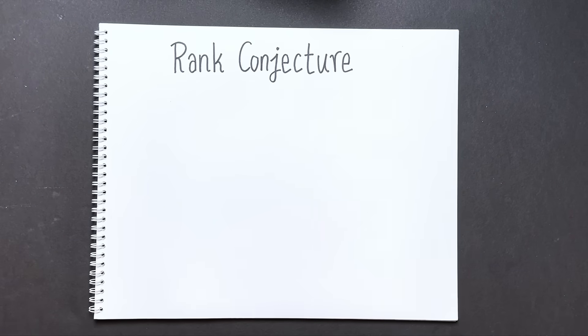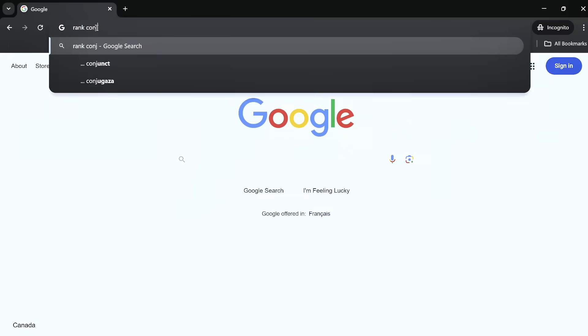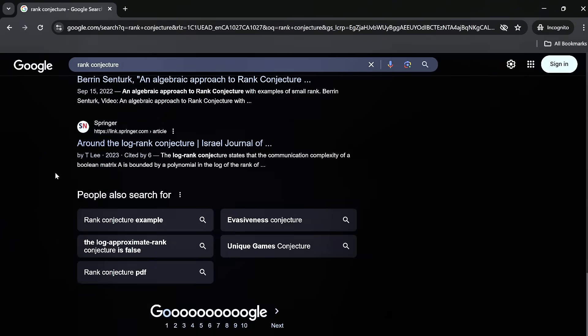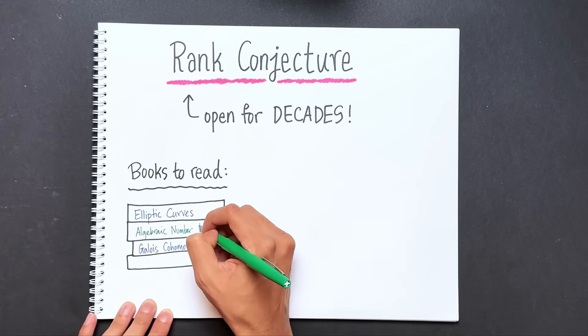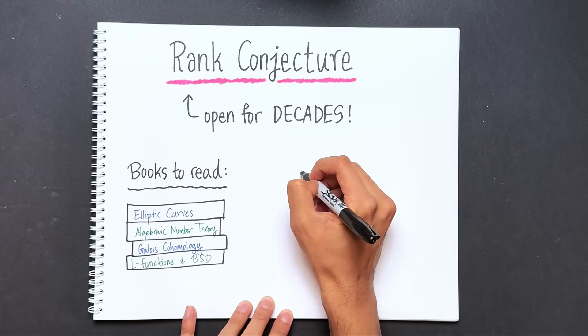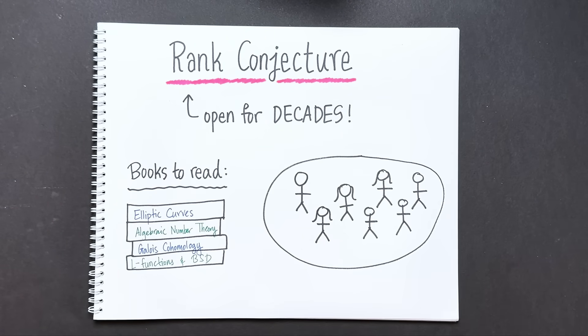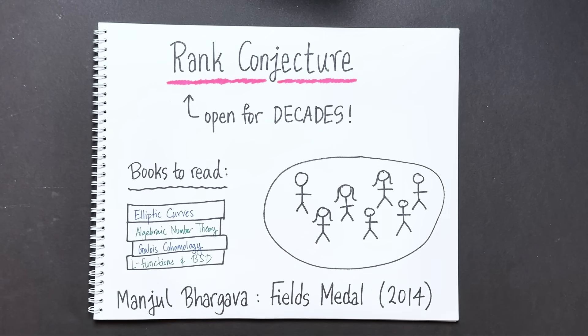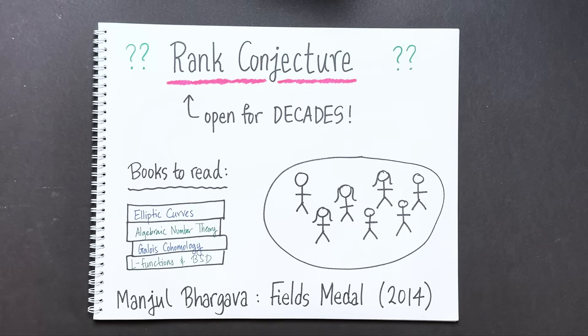This video is about a problem so difficult that math just isn't ready to solve it. It's been open for several decades and we're nowhere close to a solution. Even stating the problem requires years of specialized study - the only way to truly understand it is to be part of a small inner circle of mathematicians who've spent decades thinking about it. And yet this problem was important enough to win Manjul Bhargava the Fields Medal in 2014.